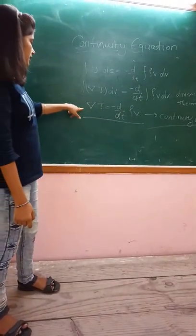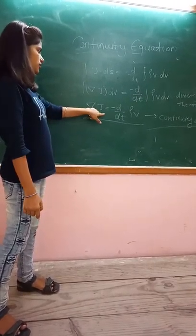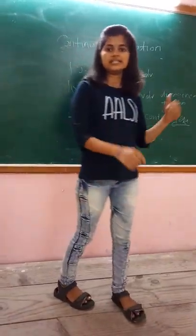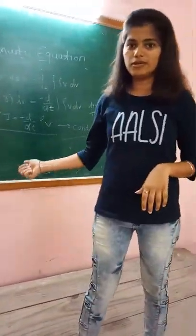By the divergence theorem, we can get ∇·j equals minus ∂ρ/∂t. This is the continuity equation.